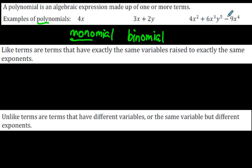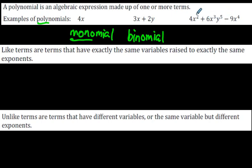This one has one, two, three terms — technically you could call it a trinomial, and it has three terms. It's definitely not a typical trinomial you'll see in math, but there are three terms here. To identify how many terms there are, you just look for how many things are separated by a plus or minus sign.